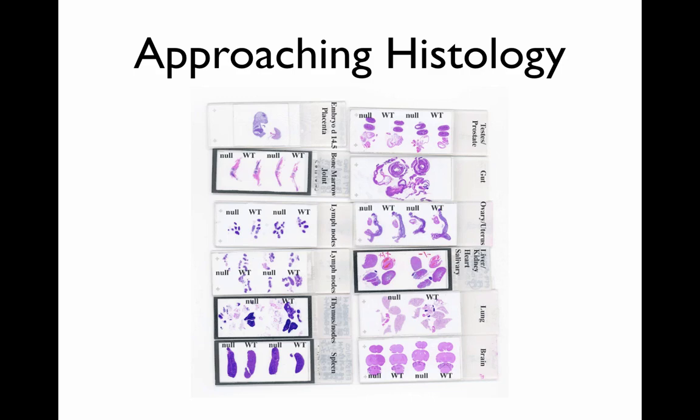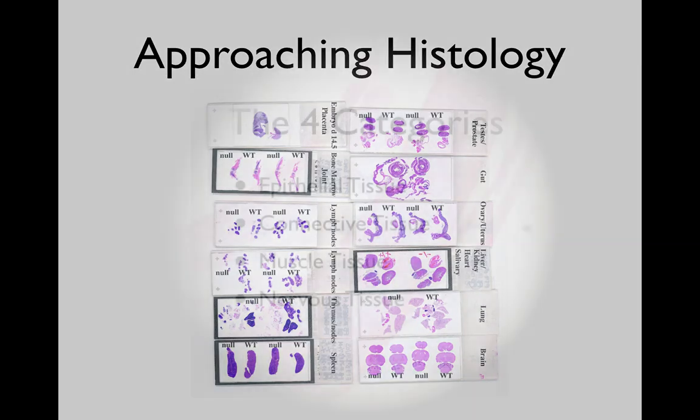Most textbooks and histology atlases will show you hundreds and thousands of pictures, but what they tend not to do is give you a real plan of attack for how to go about figuring out which tissue is which.